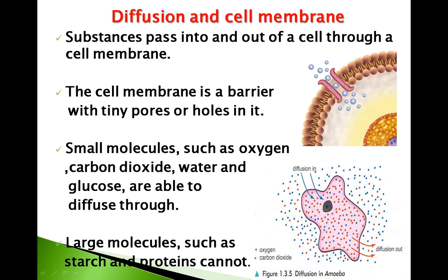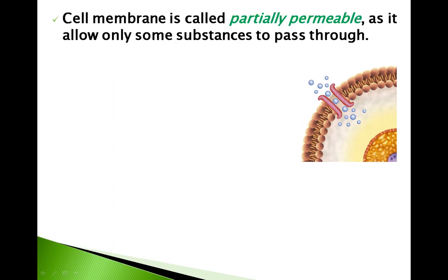The cell membrane is a barrier with tiny pores or holes in it that controls movement. Small molecules such as oxygen, carbon dioxide, water, and glucose are able to diffuse through, while large molecules such as starch and protein cannot. That is why the cell membrane is considered to be what is known as a semi-permeable membrane — at times referred to as a selectively permeable, partially permeable, or partly permeable membrane. This means the cell membrane selects what it allows to enter the cell.